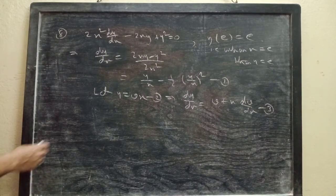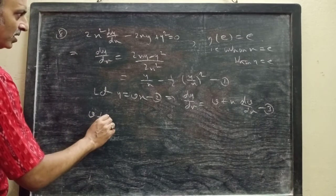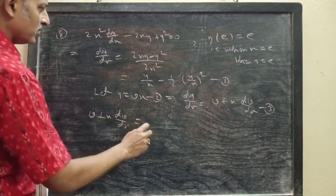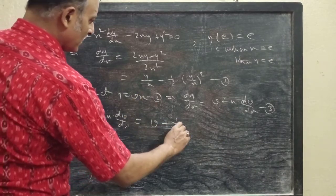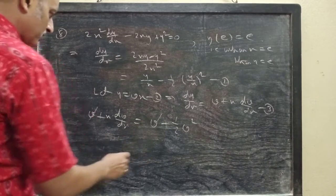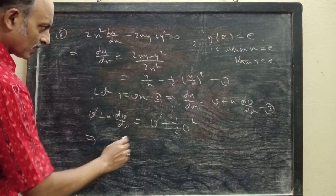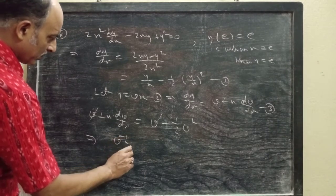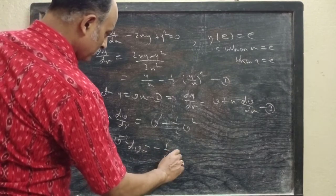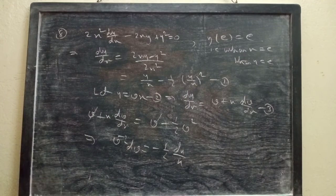Now from equations 1, 2, and 3, we replace dy/dx, so v plus x·(dv/dx) equals v minus half·v². Now cancel v from both sides. You get v⁻²·dv equals minus half·dx/x. Notice that the variables are now separated.